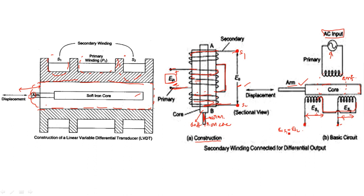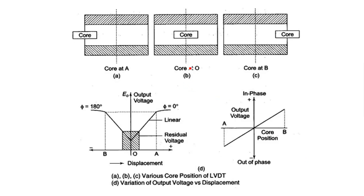As the iron core is at the center, equal EMF is developed in secondary windings one and two. If the iron core moves deeper — toward ES2 — then ES1 becomes less compared to ES2. Conversely, if the arm is taken outside and the core moves left toward ES1 and away from ES2, then ES1 becomes greater than ES2.